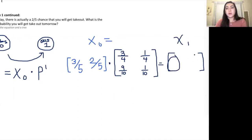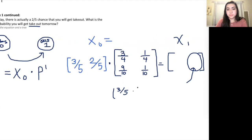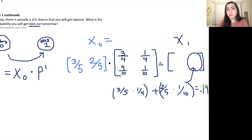We could find both entries of x1, but we only need the probability of getting takeout, which is state two — the second entry of x1. Using matrix multiplication, we take three-fifths times one-fourth plus two-fifths times one-tenth. Putting that into a calculator gives 0.19. So the probability of getting takeout tomorrow, given a two out of five chance today, is 0.19.